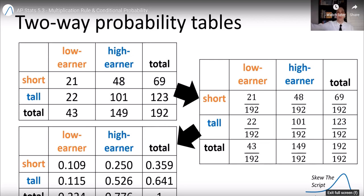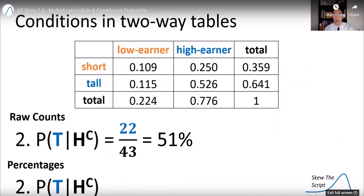And let me point out again, we have two-way probability tables in addition to the raw counts tables. The idea is still the exact same thing. So in the probability tables, they already divided for you by 192. And if we are ever given the percentages, instead of the raw counts,